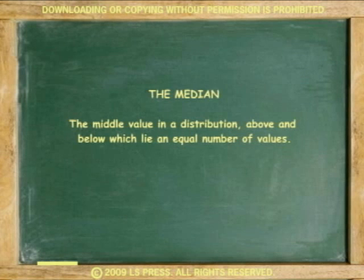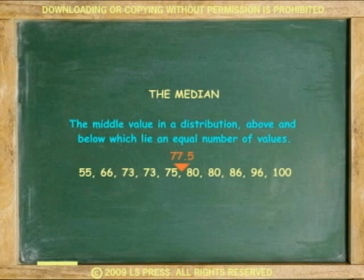Let's define the median now. After organizing the data from lowest to highest, the value in the middle of the data is the median. Officially, it is the middle value in a distribution, above and below which lie an equal number of values.